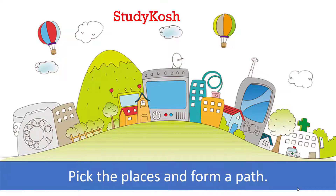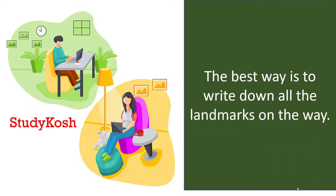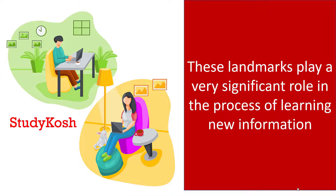Pick the places and simply form the path. One of the best ways is to write down all the landmarks on the way — as I have kept repeating in every video — whatever path, journey, or room you pick. You need to write down all the objects, all the places, and all the landmarks on a piece of paper. These landmarks play a very significant role in the process of learning new information.